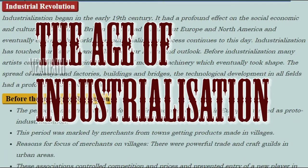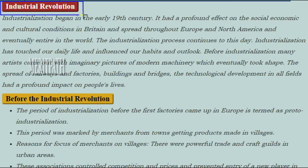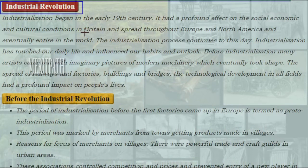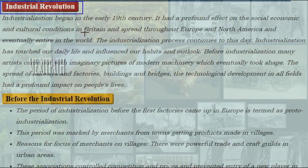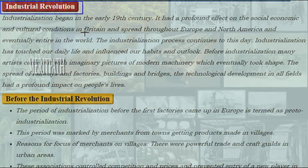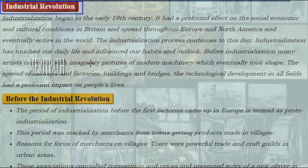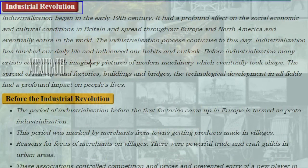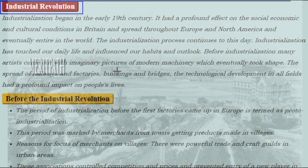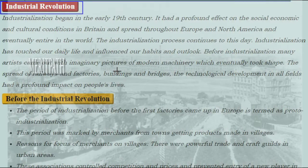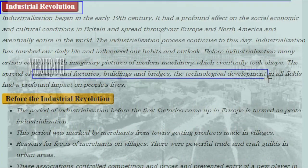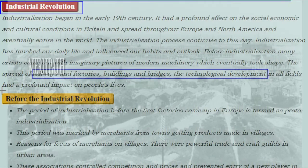The age of industrialization — what is the industrial revolution? Industrialization began in the early 19th century. It had a profound effect on the social, economic and cultural conditions in Britain, and spread throughout Europe and North America and eventually the entire world. The industrialization process continues to this day, touching our daily life and influencing our habits and outlook. Before industrialization, many artists came out with imaginary pictures of modern machinery which eventually took shape.